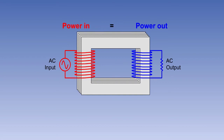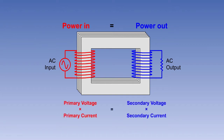Transformers are almost 100% efficient in their transfer of power from the primary to the secondary windings. So, for all practical purposes, we can say that the power that goes into a transformer equals the power that comes out of it. From this, we can say that the product of the voltage and the current in the primary winding will be equal to the product of the voltage and current in the secondary winding.